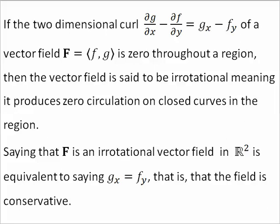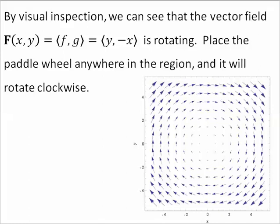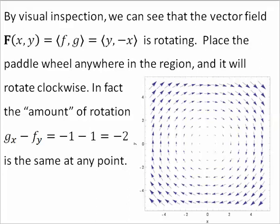By visual inspection, we can see that this vector field is rotating. Place the paddle wheel anywhere in the region and it will rotate clockwise. In fact, the amount of rotation, negative 2, is the same at any point. A curl of negative 2 is consistent with clockwise rotation.